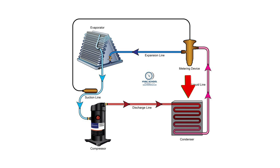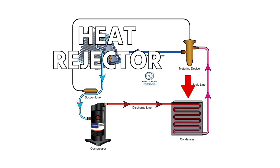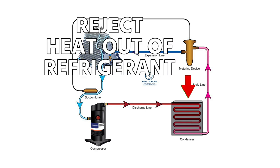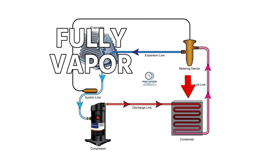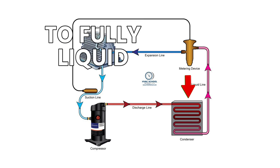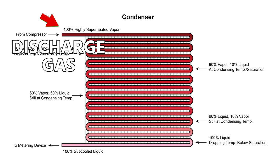If you remember our description of the condenser, the condenser is the heat rejector. Its job is to reject the heat out of the refrigerant, which then in turn changes its state, starting with fully vapor all the way down to fully liquid. So if you imagine your discharge gas vapor goes into the top of the condenser and it works its way down.